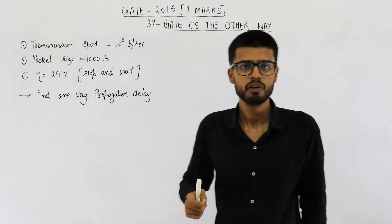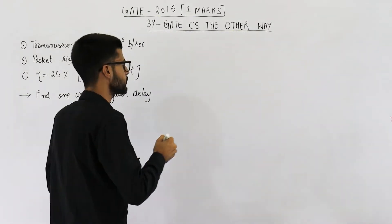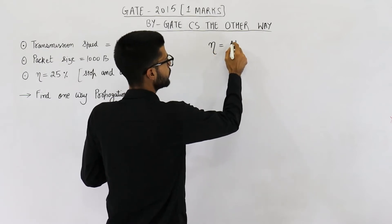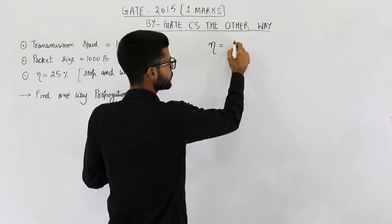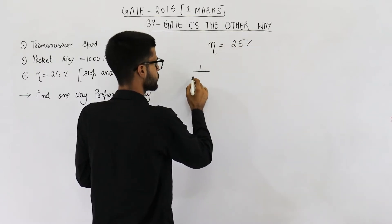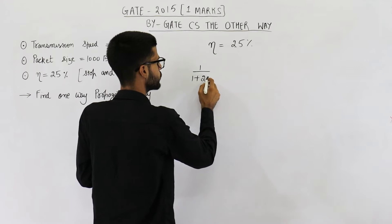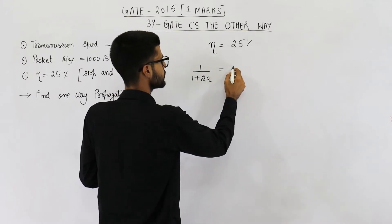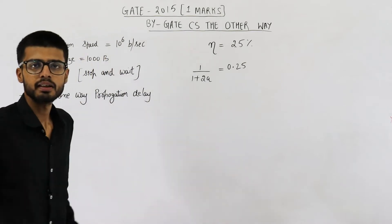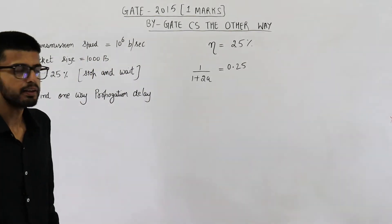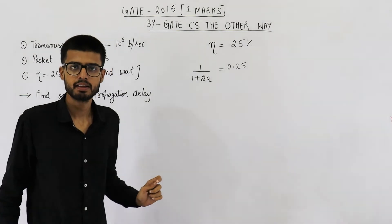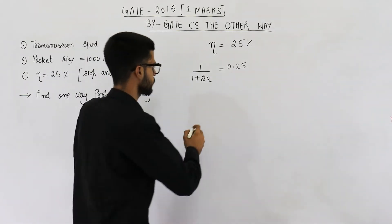We want the efficiency to be 25 percent, that means 1 upon (1 + 2a) must be 25 percent. The formula for efficiency in stop-and-wait is 1 upon (1 + 2a), and this must equal 0.25. Here, 'a' is tp divided by tt — that means propagation delay divided by transmission delay.